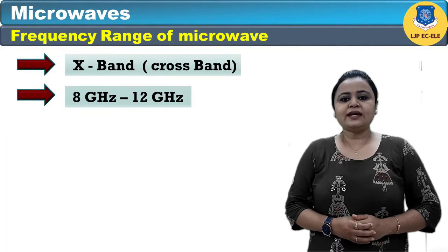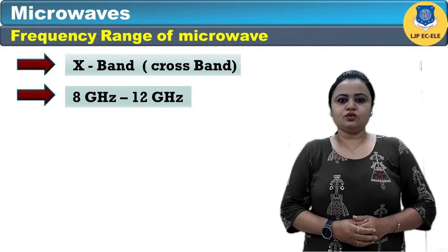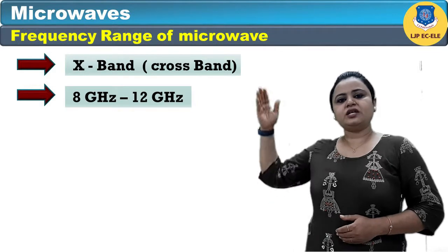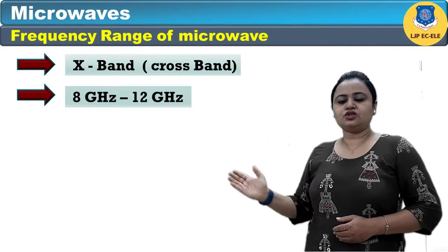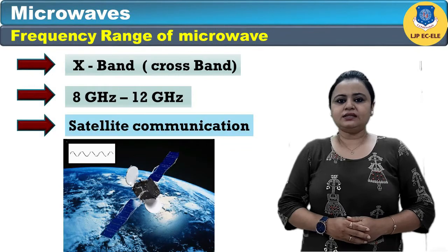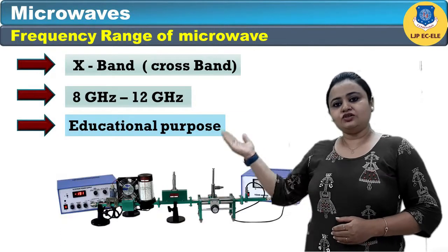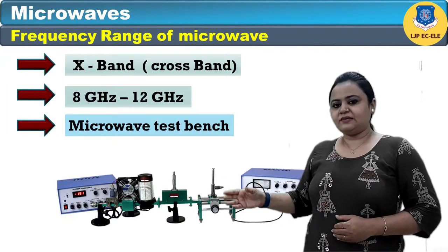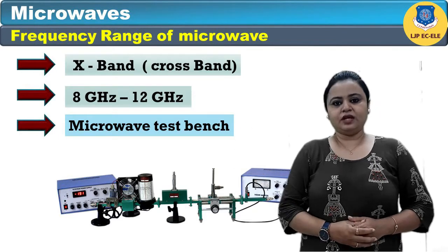The next band is the X band, also known as cross band, which ranges from 8 GHz to 12 GHz. It is useful in satellite communication and educational purposes, such as microwave test benches which use this band of frequency.